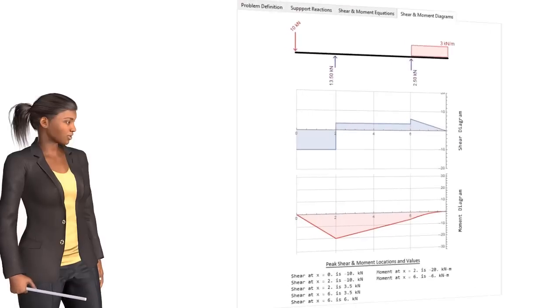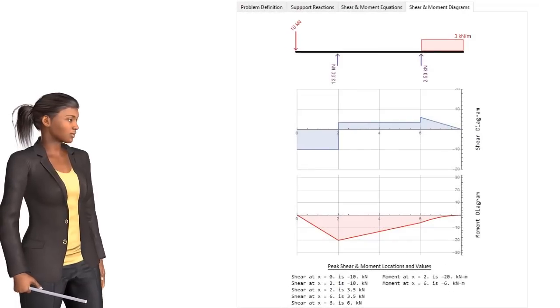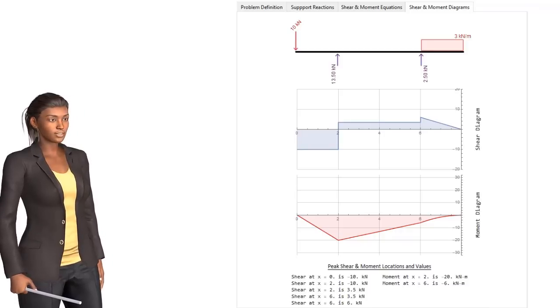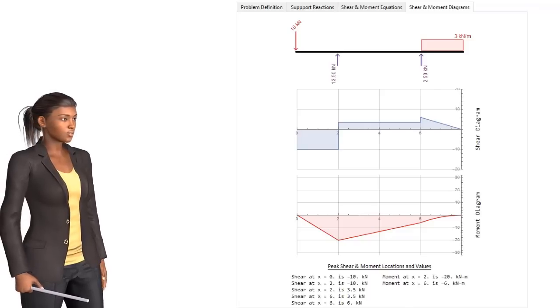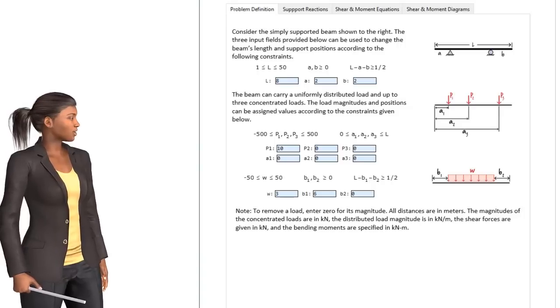The fourth tab is for viewing the shear and moment diagrams and their peak values. Feel free to use this interactive document for validating your work when formulating shear and moment equations and drawing their corresponding diagrams. The tool works for any simply supported beam that adheres to the parameters and constraints specified on the problem definition page.